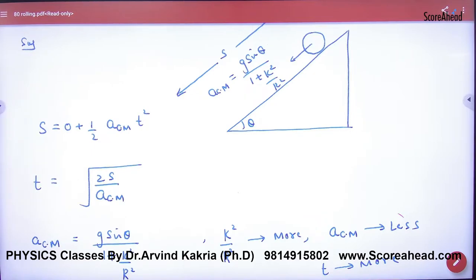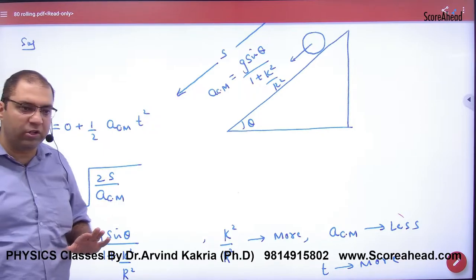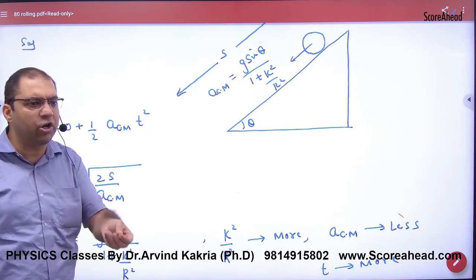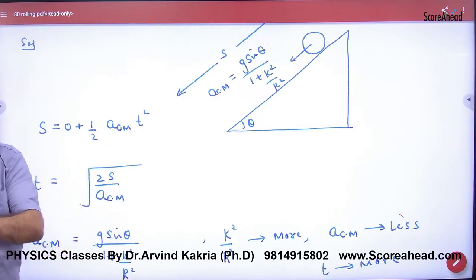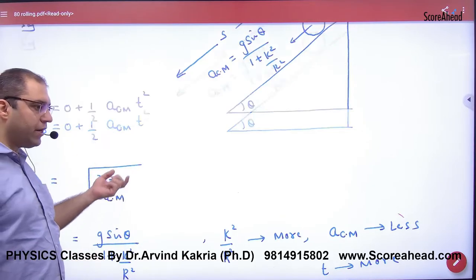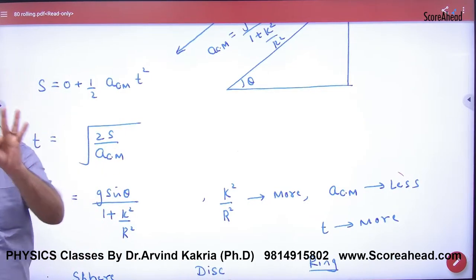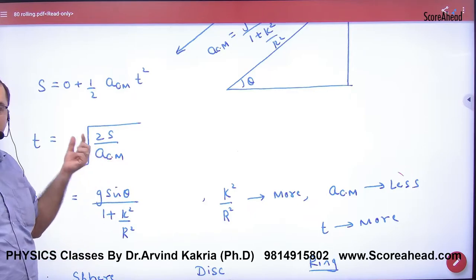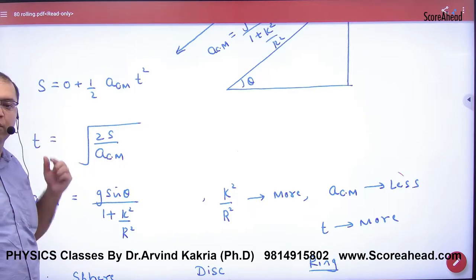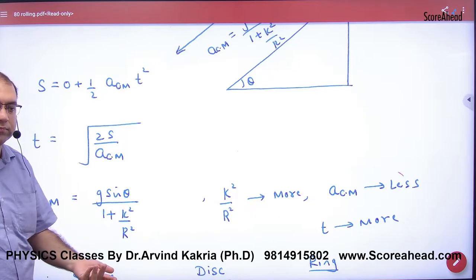S is equal to zero plus half at². Because for the center of mass it is zero plus half at². The center of mass moves in linear motion. Now, what is the time from cross-multiply? You have taken out through the three bodies. This is important: the three bodies which have the most acceleration will have reduced time taken.